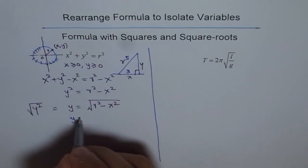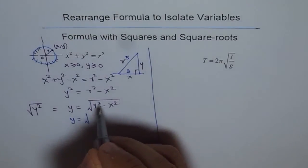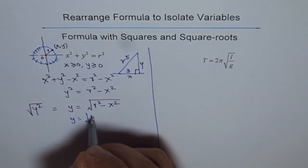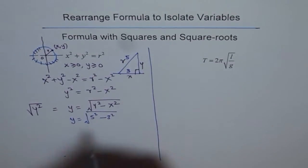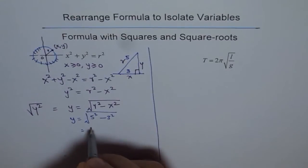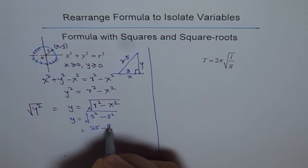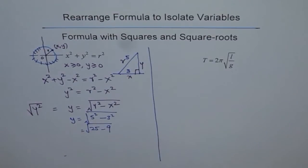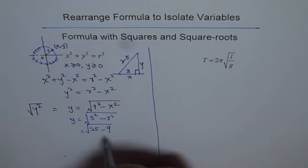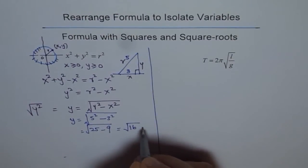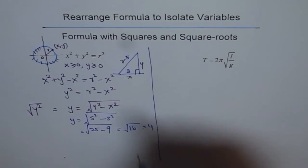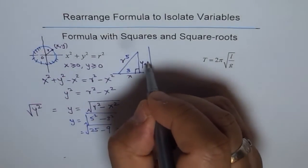Height equals √(r² - x²), which is √(5² - 3²). 5² is 25, 3² is 9, so √(25 - 9). 25 - 9 is 16, and √16 = 4, therefore y = 4.